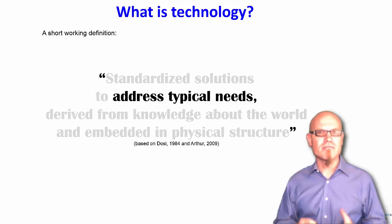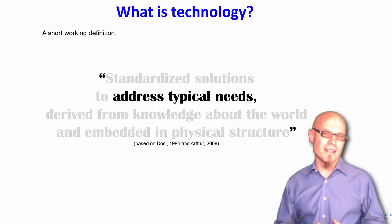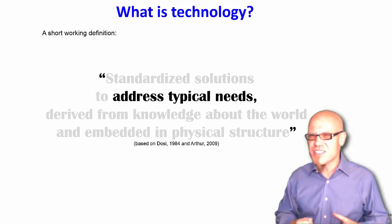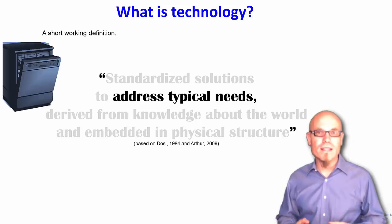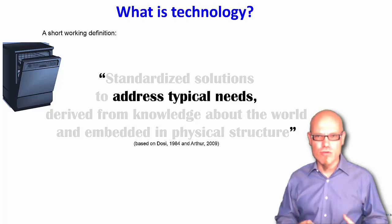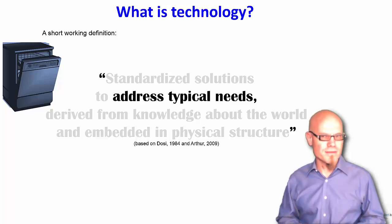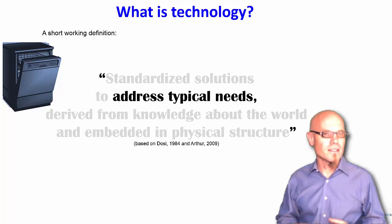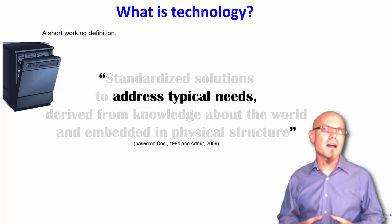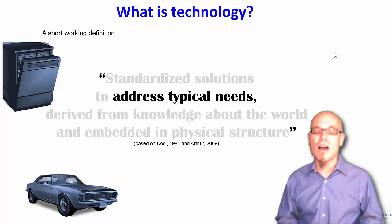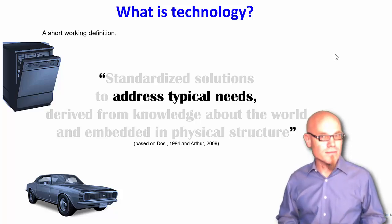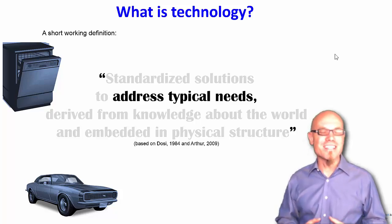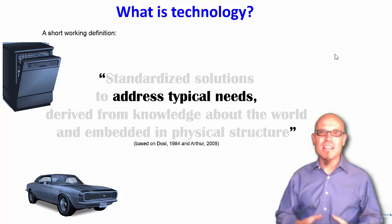Let's start with the first one: technology addresses a typical need. Let's start with a very tangible technology — digital technologies are sometimes not so tangible — so let's start with a dishwasher. What is the typical need addressed by the dishwasher? Obviously it washes the dishes. What about the car? Also technology. What is the typical need addressed by the car? Obviously it helps us to go from A to B.